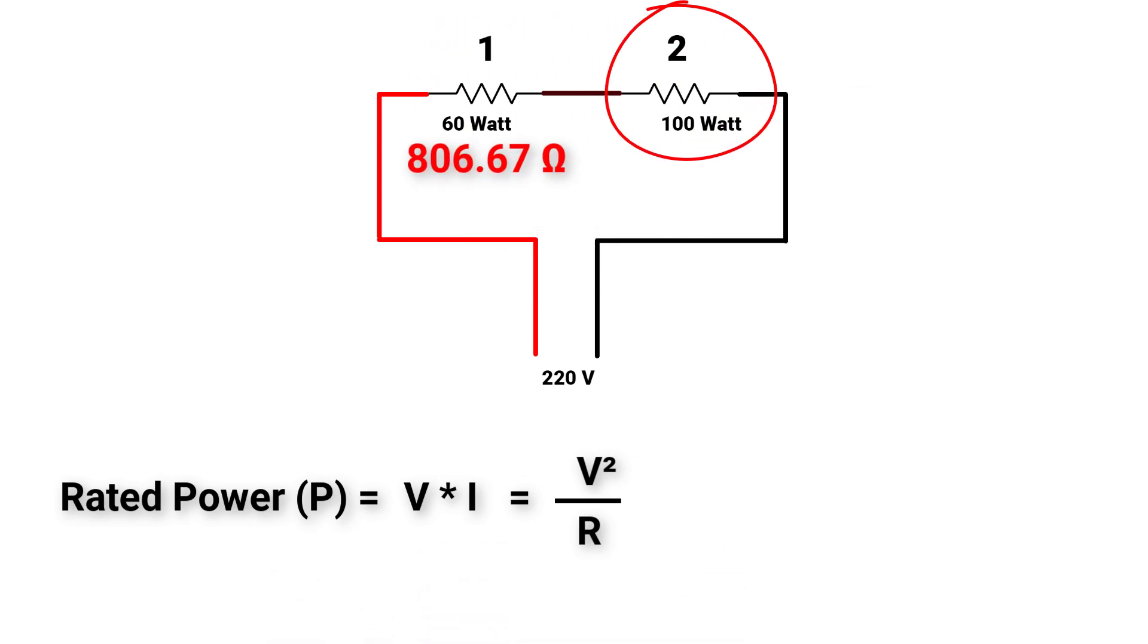In the second lamp, 100W will equal to 220V squared over R. I will call it here R2. So R2 will equal to 484 Ohms.